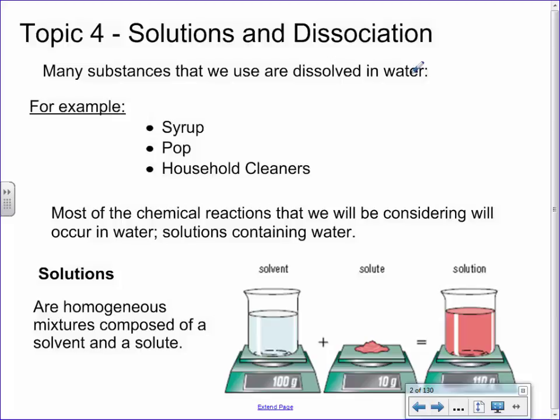A third example would be household cleaners — bleach, ammonia, pine-sol — very liquid-based things, but there's stuff dissolved inside. That's the key word: dissolved, where one thing is inside of another. It's not a pure substance; there's more than one thing happening.